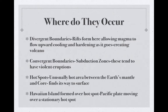Where do volcanoes occur? They occur at divergent boundaries where plates come apart. The rifts form here, allowing magma to flow upward, cooling and hardening, creating a volcano. They can also occur at hot spots — unusually hot areas between the earth's mantle and core — and as plates slowly move over these hot spots, the weak areas allow magma to come up.